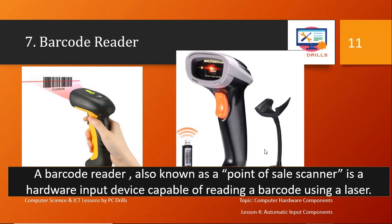Next is the barcode reader, also known as a point-of-sale scanner. It is a hardware input device capable of reading a barcode using a laser. When you go to a supermarket like in our earlier example, this is the device they use — it may be a different design but it reads barcodes. You just pass the item in front of it, it reads the barcode as shown in the image, and converts the information into a format the computer understands to complete your transaction.